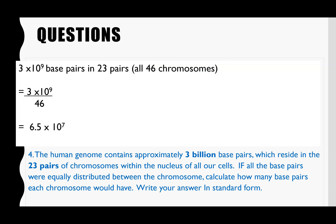The last question: the human genome contains approximately 3 billion base pairs residing in the 23 pairs of chromosomes. If all base pairs were equally distributed between the chromosomes, calculate how many base pairs each chromosome would have — give your answer in standard form. 3 billion is 3 × 10⁹. With 23 pairs we have 46 chromosomes in total. So 3 × 10⁹ divided by 46 equals 6.5 × 10⁷ in standard form.